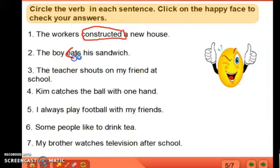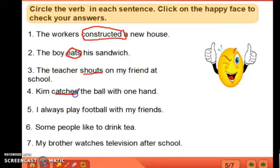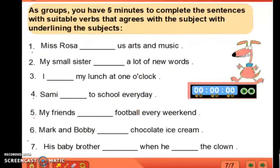The two questions again: who is the sentence talking about? The boy. What does the boy do? The boy eats — so 'eats' is the action verb. 'The teacher shouts at my friend at school.' Here 'shouts' is the action verb. Other examples include: catches, play, like, and watches.